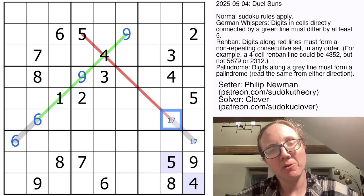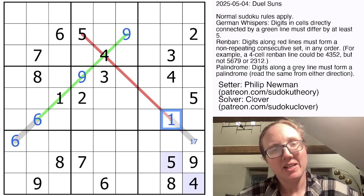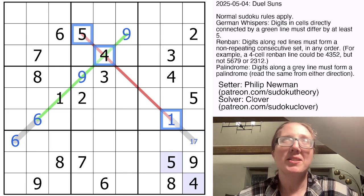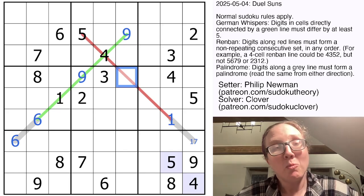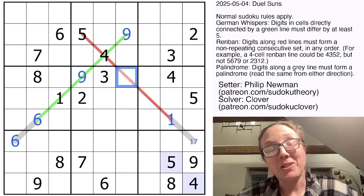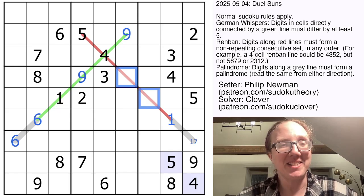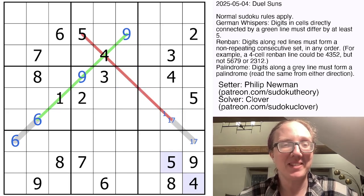However, if we were to put a one here, then our Renbon would have to consist of one, two, three, four, five, which begs the question, what do we put in this cell? It can't be a two or three, but those are the only two digits that we would still need on the Renbon. So this has to be a seven.